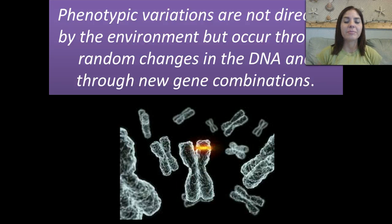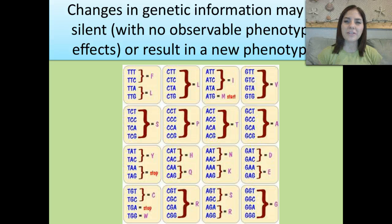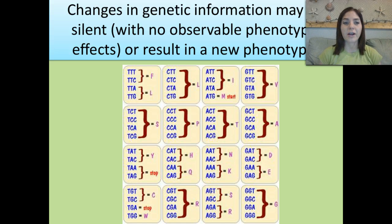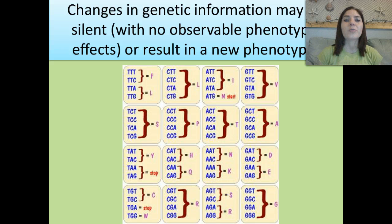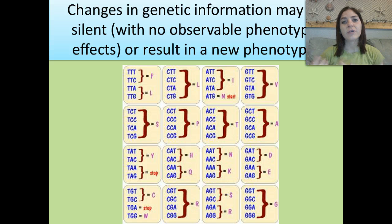Phenotypic variations aren't directed by the environment, but they occur through random changes in the DNA and through gene combinations. Changes in genetic information can be silent, with no observable phenotypic effects, or they can result in a new phenotype. If you think back to when we spoke about mutations, a silent mutation would be a point mutation that was synonymous, meaning even though our nucleotide bases may have changed, it's still going to code for the same amino acid.